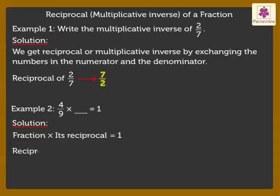The Reciprocal of 4 upon 9 is 9 upon 4. Thus, 4 upon 9 into 9 upon 4 gives 1.